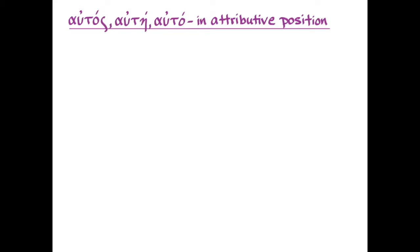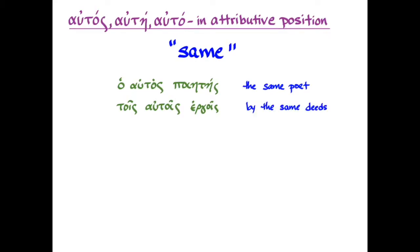So let's look at how you translate it in each of those conditions. So first, we're going to look at autos, autay, autaw in attributive position. And in attributive position, it is simply an adjective that means same. So we can have a couple of examples here. Autos, autos, autos, poietes is the same poet. Autos, autos, autos, ergois, perhaps, is by the same deeds.